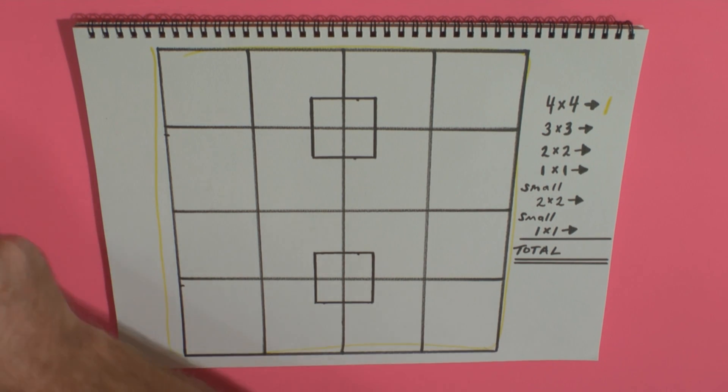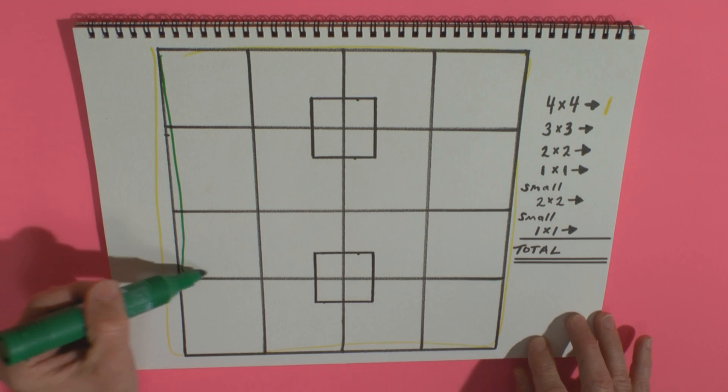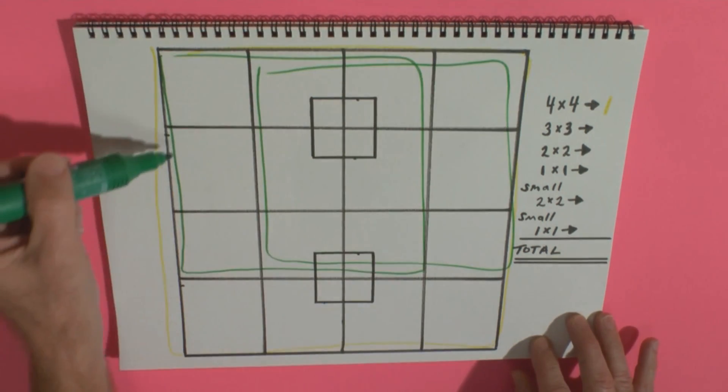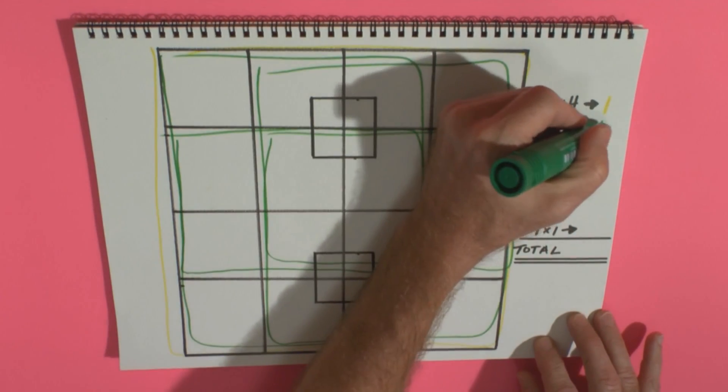Next, the three by threes. Let's draw these three by three squares. There's one, there's two, there's three, and four. So four of those.